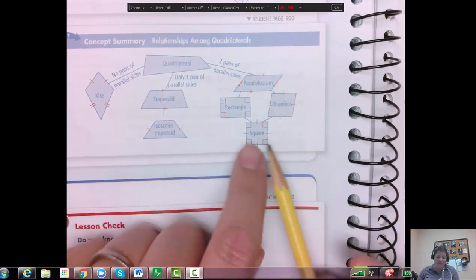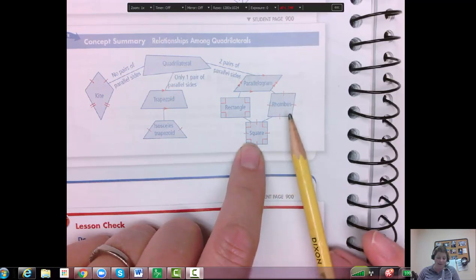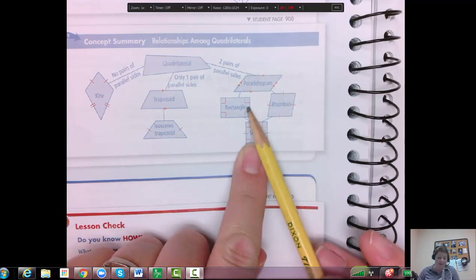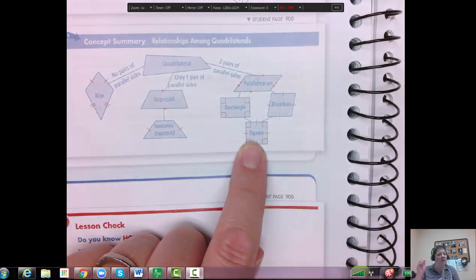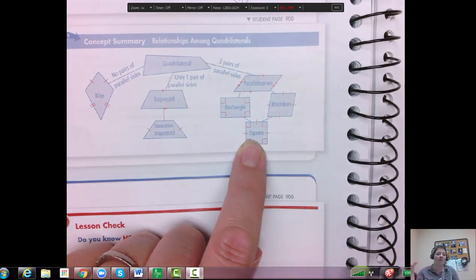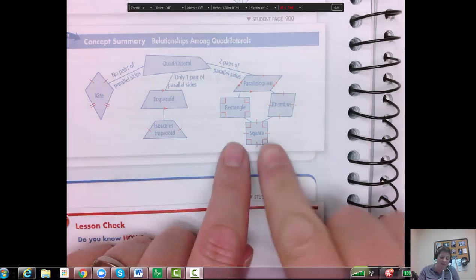So remember, if I have a square, I am also a rhombus, I'm also a rectangle, a parallelogram, and a quadrilateral. All of those names go with a square. It meets all of their definitions. Now square is the only one that meets its own definition, but backward it works.